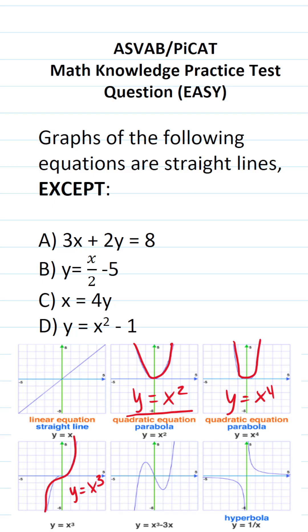That is to say, when the variable x is raised to some power other than one, you no longer have an equation of a line. If you look at answer choice D, we have y equals x squared minus one. This would be a parabola, not a straight line. So the correct answer is D.